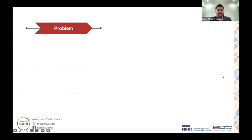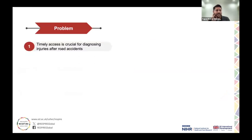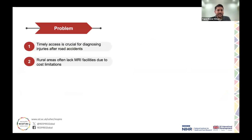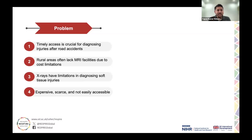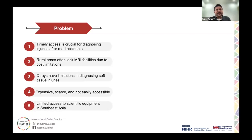There are certain problems we wanted to address. Timely access is crucial for diagnosing injuries and road accidents, since India's population is quite high and accidents happen frequently. In rural areas there is a lack of MRI facilities because of cost limitations, and X-rays cannot detect internal injuries or internal bleeding. MRIs are expensive, scarce, and not accessible — they are only available at tertiary care hospitals far from villages. There is also limited scientific equipment available in South Asia, and we have to rely on costly imports from other countries.